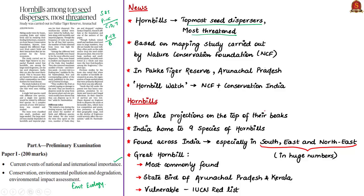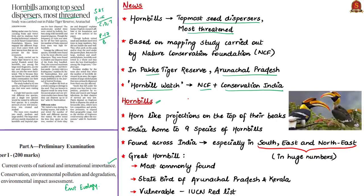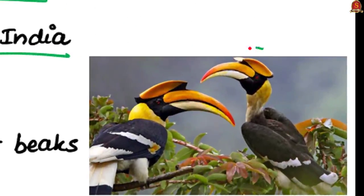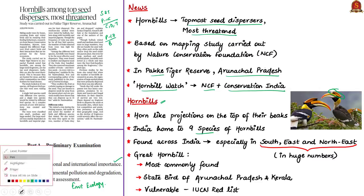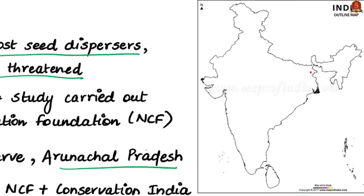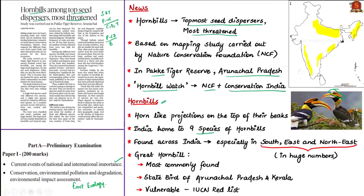Additionally, know that Hornbill Watch is an initiative by the Nature Conservation Foundation partnered with Conservation India. Pakke Tiger Reserve is located in the state of Arunachal Pradesh. Hornbills got their name due to horn-like projections on the top of their beaks. India is home to nine species of hornbills, found across India, especially in large populations in southern India, eastern India and northeastern India.